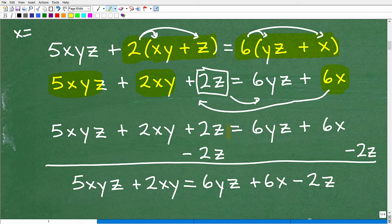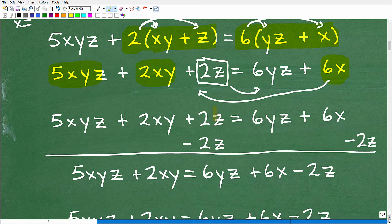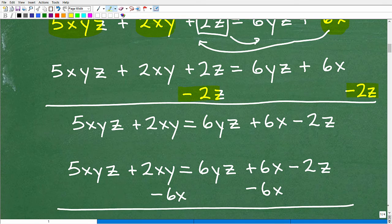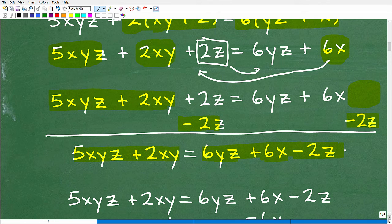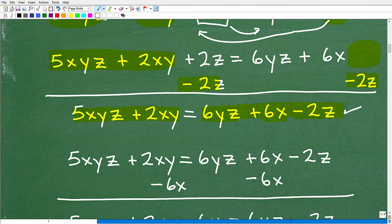So let's work on the 2z first. So how do I get rid of this positive 2z on this side? Well, I can just subtract it away from both sides of the equation. And when I do that, I get 5xyz plus 2xy. That's all that's going to be remaining now over here because we got rid of that. And then this gets behind this 6x term over here. So we get 6yz plus 6x minus 2z. So hopefully that makes sense. And we're just doing things one step at a time. Remember, I want to get rid of that 2z, put it over on this side. I just finished doing that.